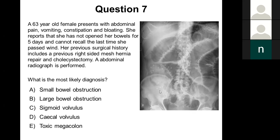Further confirmation: the cecum, ascending and transverse colon are barely visible with no air — collapsed large bowel — meaning the blockage must be in the small bowel. Previous mesh hernia repair is relevant as adhesions from abdominal surgery are the most common cause of small bowel obstruction in the Western world. Toxic megacolon would show featureless dilated large bowel with thumbprinting, and there is far too much dilated bowel here to represent ascending, transverse and descending colon alone.